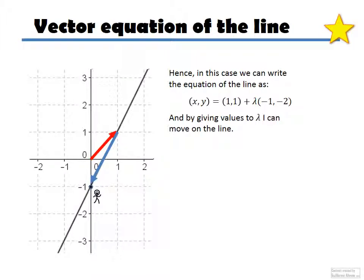So I give any values to this lambda thing, and I move along it. So this one's going to be the position vector to get, first of all, from the origin to anywhere in the line, and then (-1, -2) the direction vector, just the vector that moves along the line, and it doesn't matter which one.